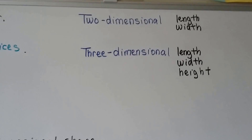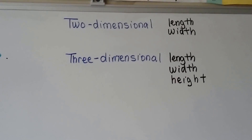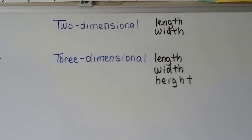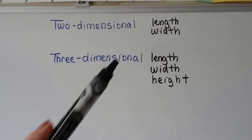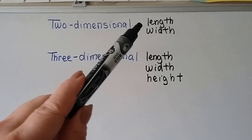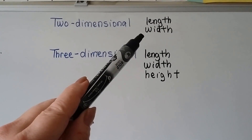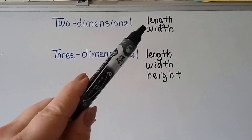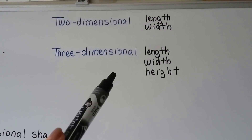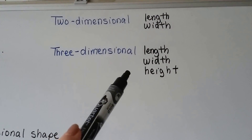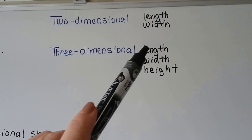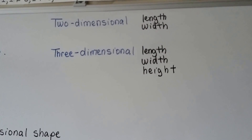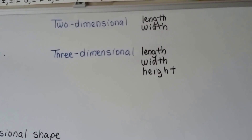I want you to remember, we've learned about this before. Two-dimensional shapes have two dimensions: length is a dimension, and width is a dimension — one, two. Three-dimensional shapes have three dimensions: one, two, three — length, width, and height.